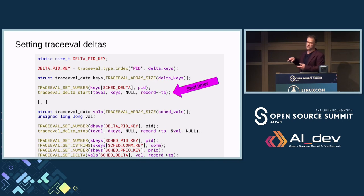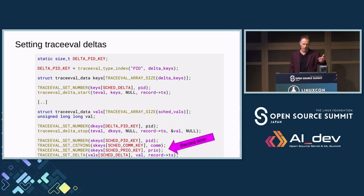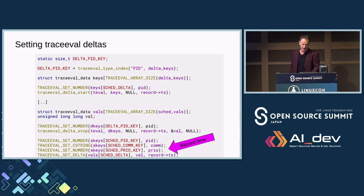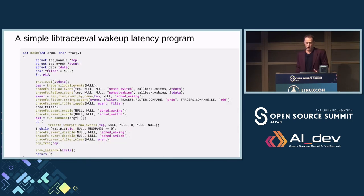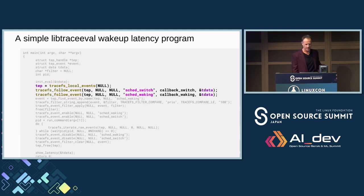For the wakeup latency program using libtraceeval, the first thing I do is initialize my data structure. I give all the events — I could have just done the sched events, but I said do all events for simplicity. Then there's something different from the first program: tracefs_follow_event. This means I don't have to parse which event is being called — I just register specific callbacks.